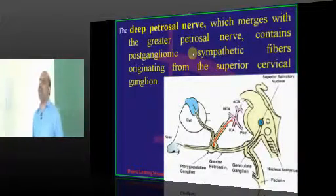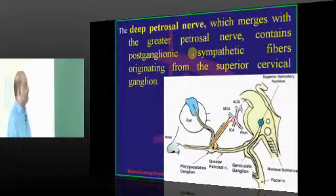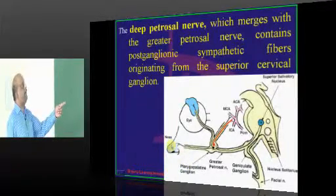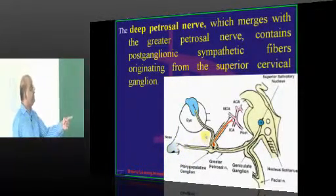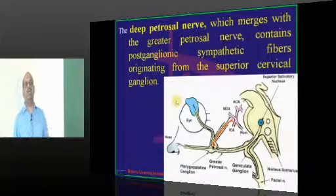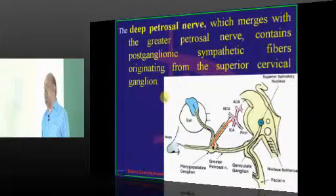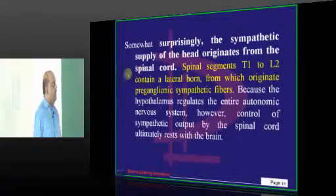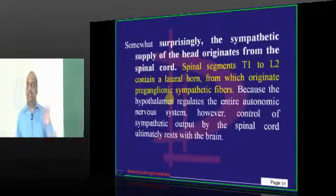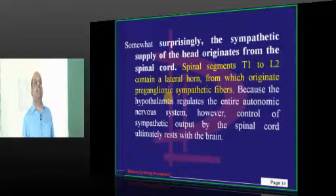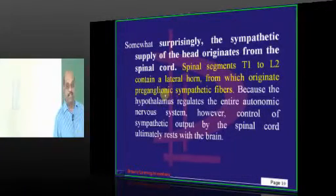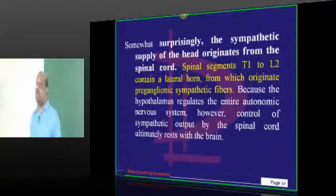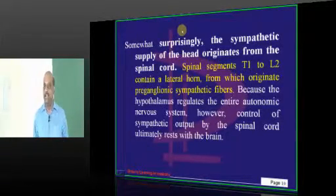What is deep petrosal nerve? The deep petrosal nerve merges with the greater petrosal nerve and it is the one which basically contains the post-ganglionic sympathetic fibers, not pre-ganglionic is what you are going to remember.